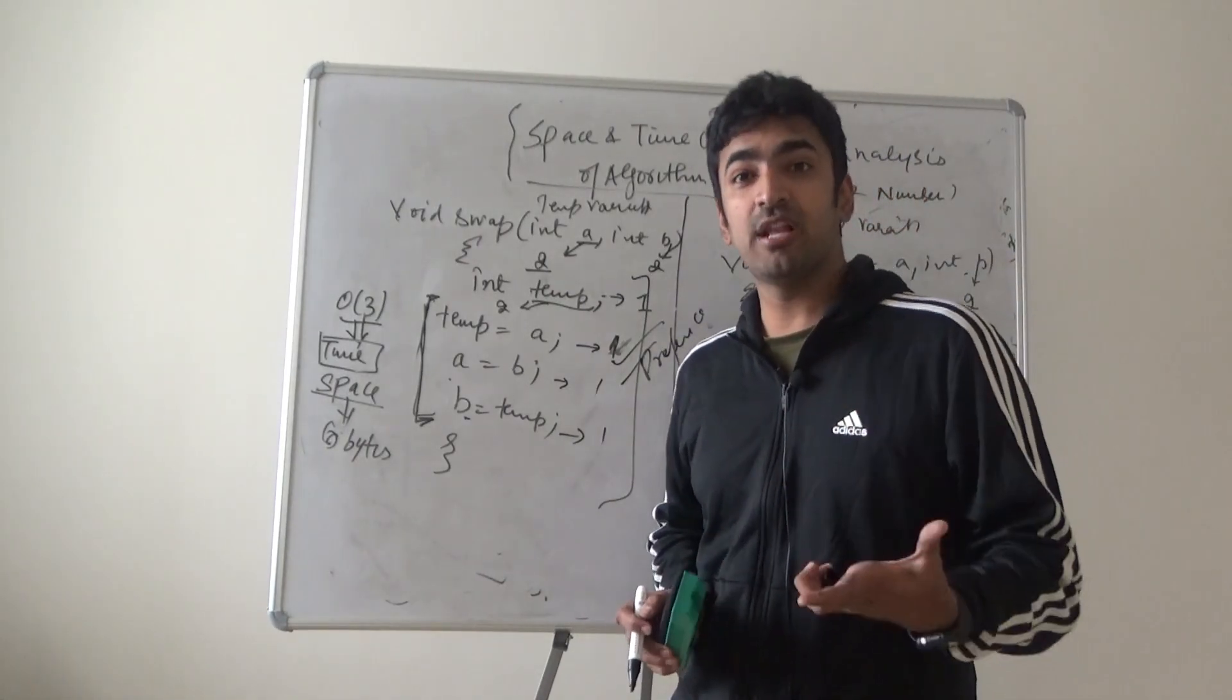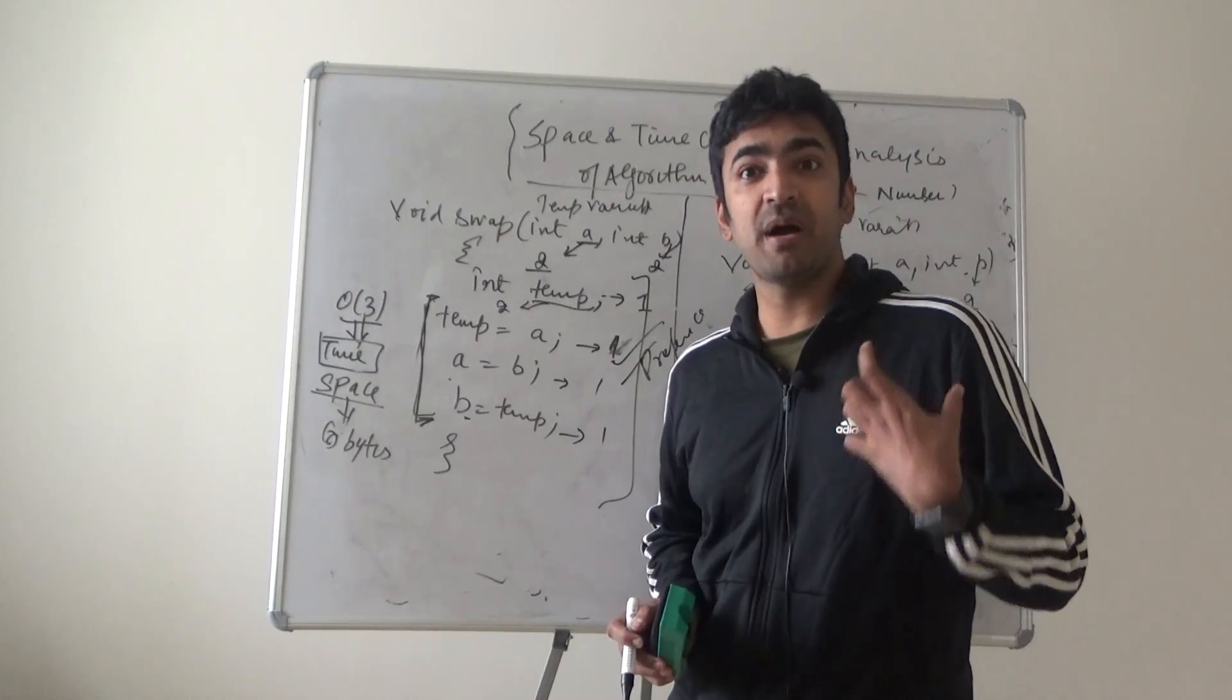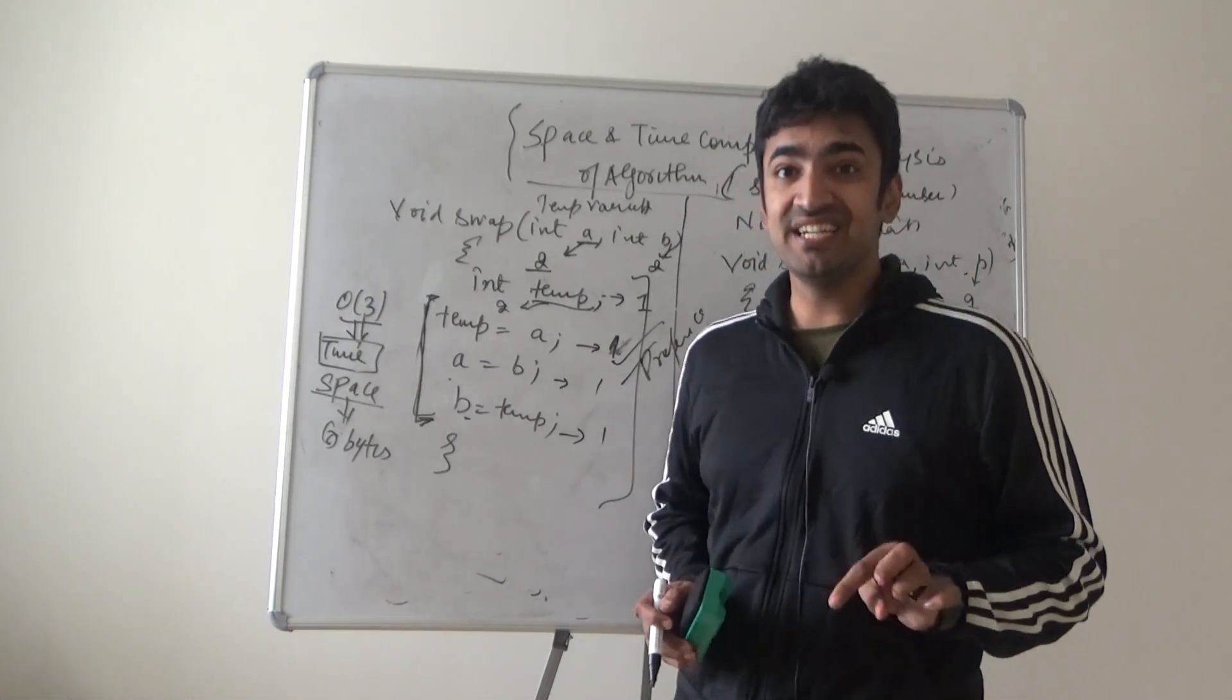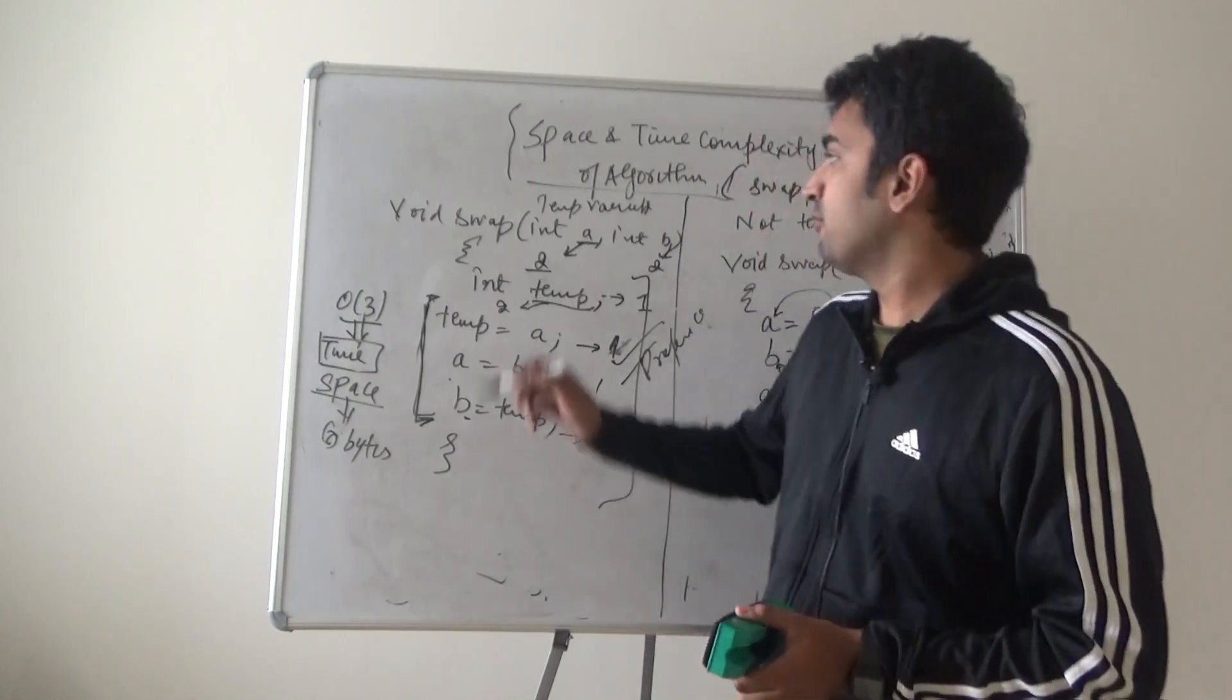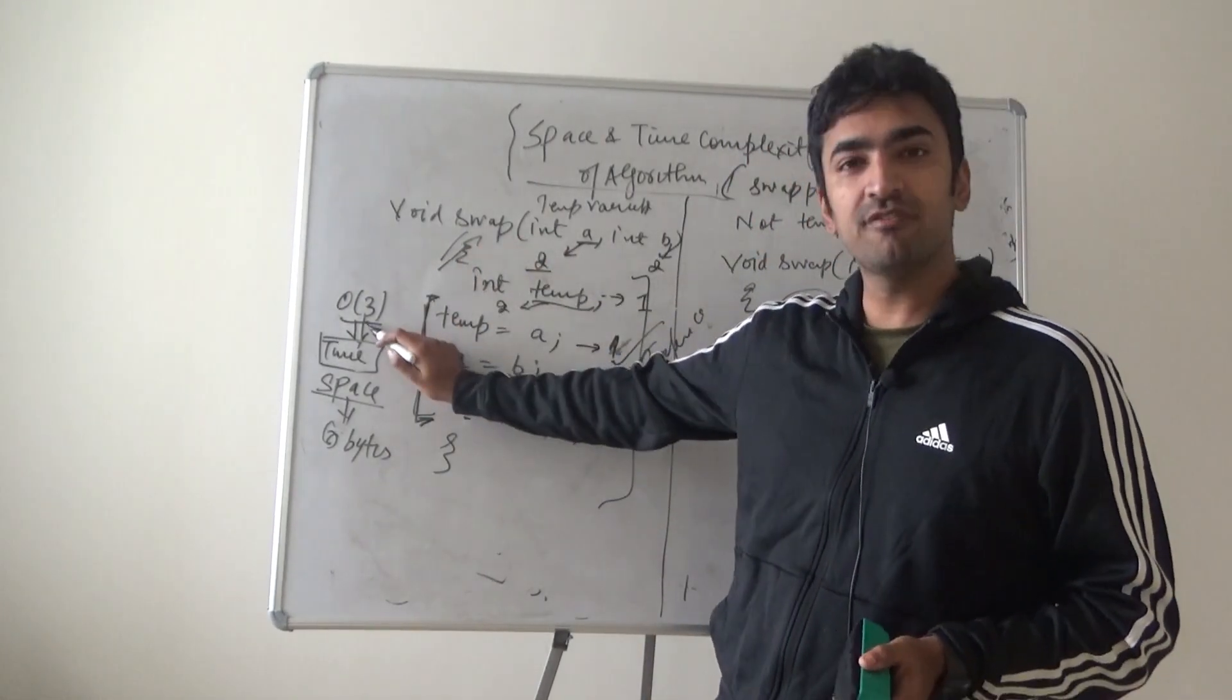because we as a programmer measure the program by using their time complexity. Space is secondary, it is purchasable. I would prefer this because it is using three units of time.